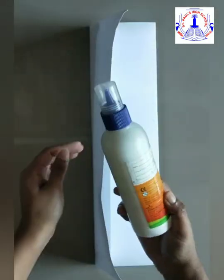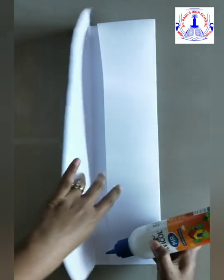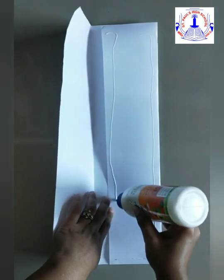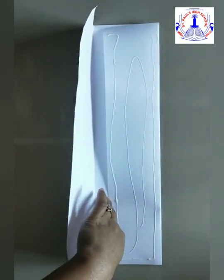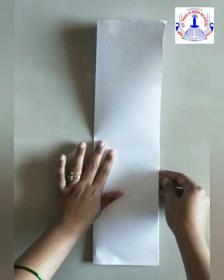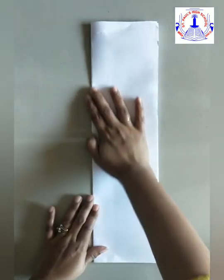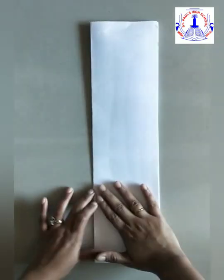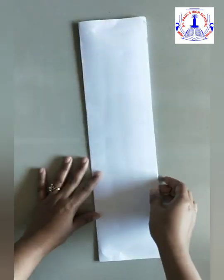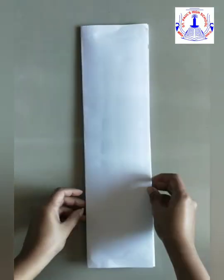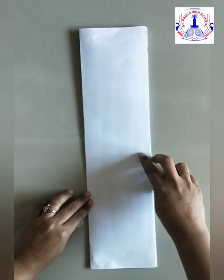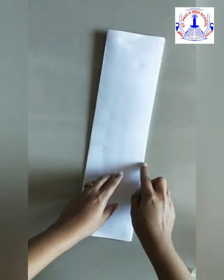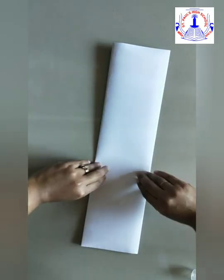Now take a glue and we will stick this. Now are we done? Now let us fold into half. Now once we have stuck it like this, we'll turn this, keep this side at the back. Now we'll fold it into half.